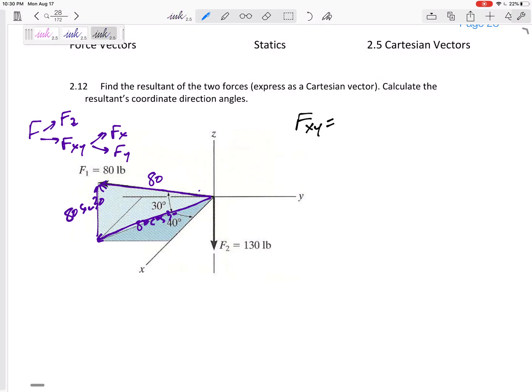So f, the xy component would be 80 cosine 30, that would be 69.23. The z component would be 80 sine 30, that would be 40. All right, now so I'll take this 69.23.